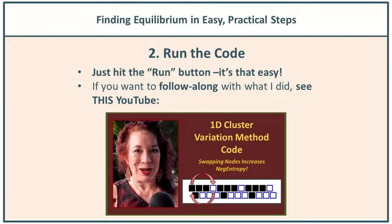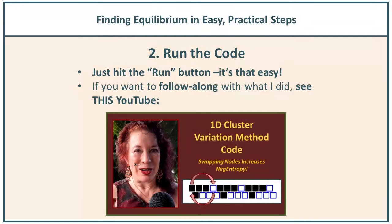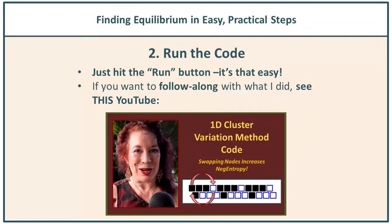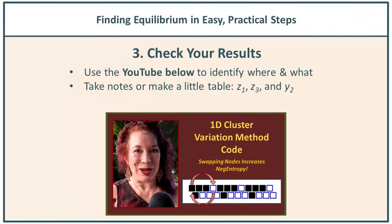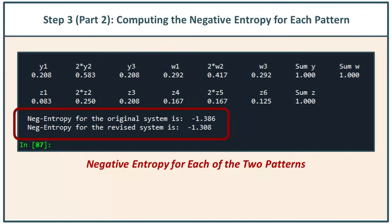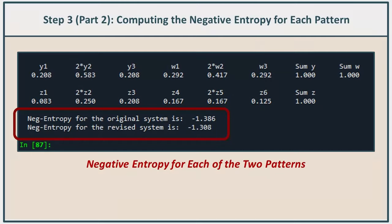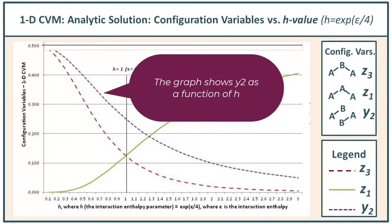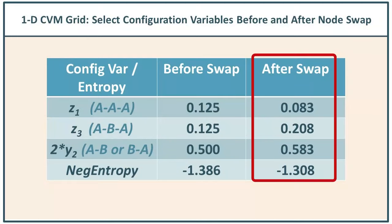You can also go to our blog post — see the link in the description box below — which has a link to the content page, taking you to the PowerPoint, the GitHub repo, and a link to a technical report with the derivation for the analytic solution. There's also a link to an Excel spreadsheet that works out the analytic values for the 1D CVM. Once you've done this, the next step is to run the code — just hit the Run button. Take note of your results, especially for the y2, z1, and z3 values. Note that what the code outputs for y2 is actually 2 times y2, while the graph shows y2 itself as a function of the h value.